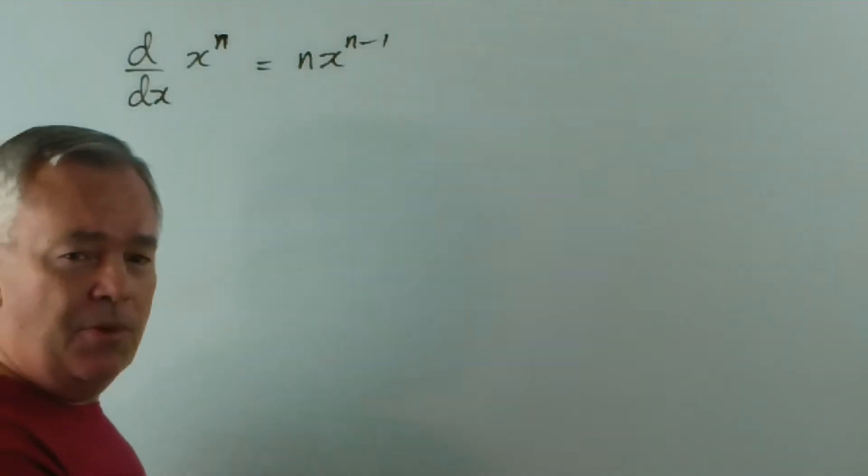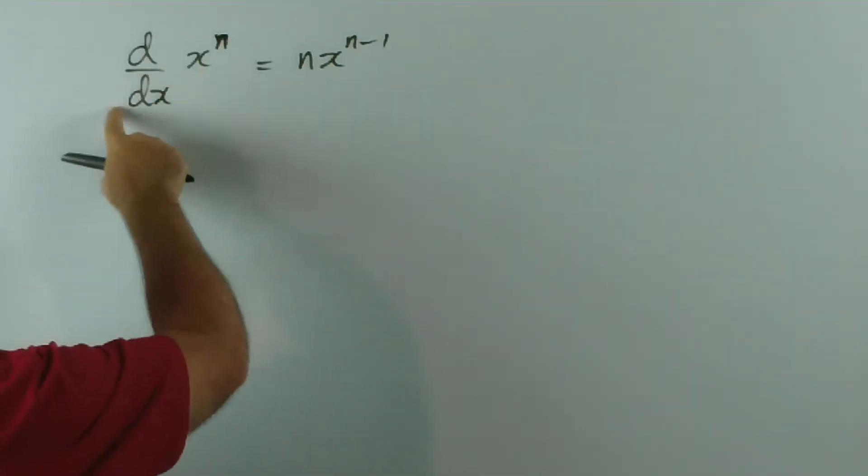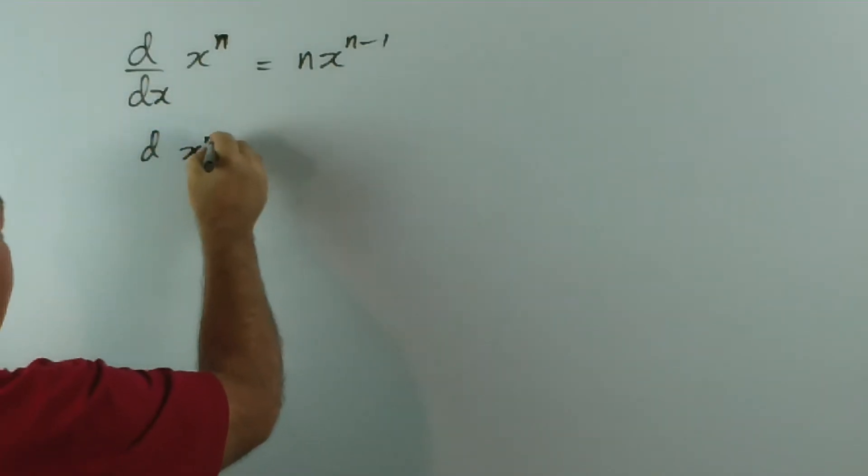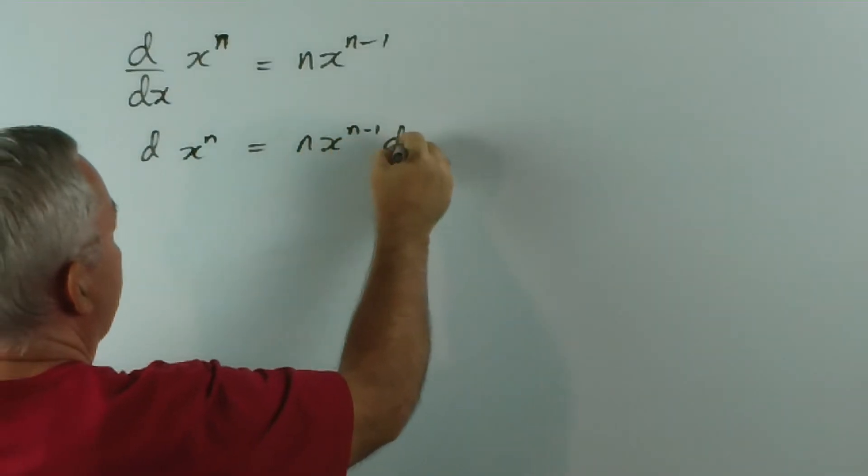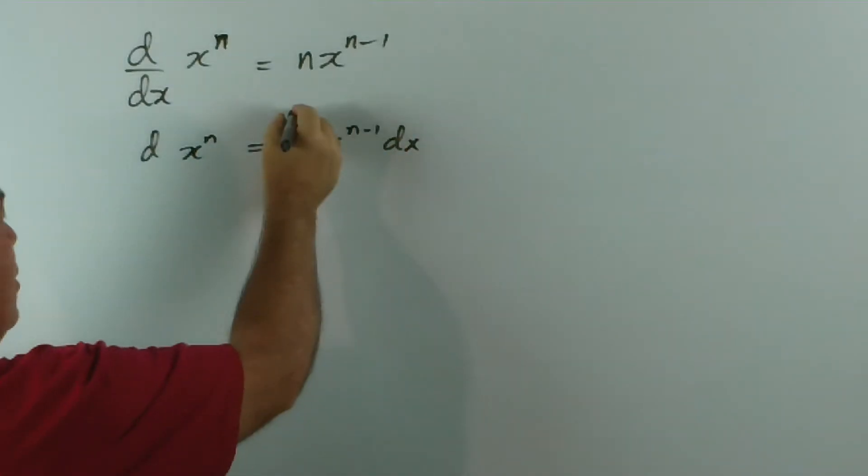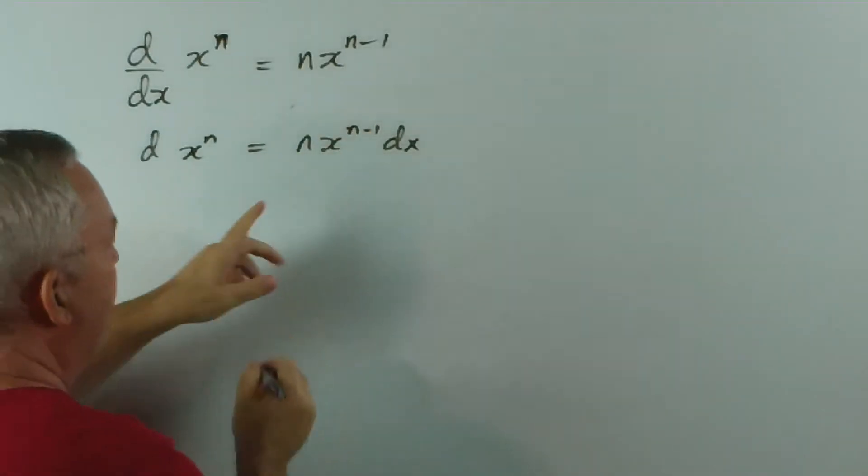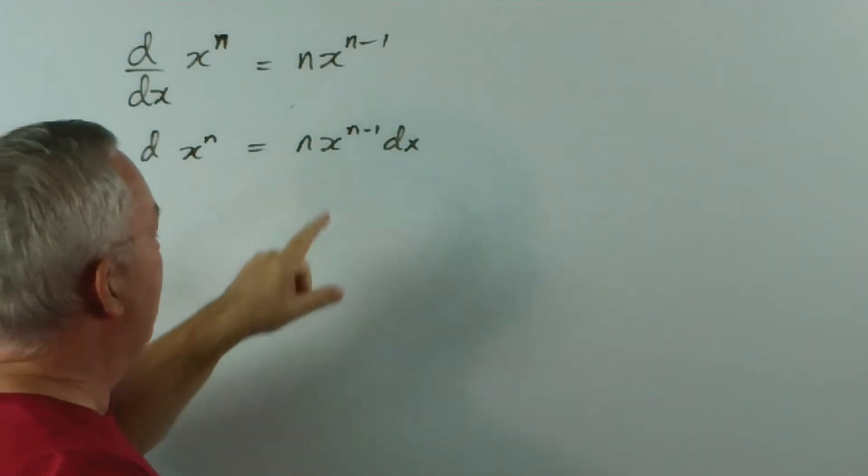If you watched the last video, you will understand this transformation that follows. We multiply both sides by dx. And then we integrate both sides. Now, the integral sign can go in front, or it can go between the number—remember, n is a constant—and the function.